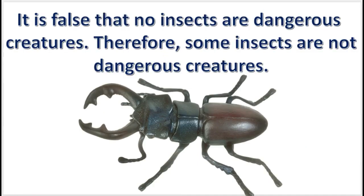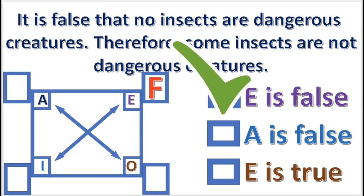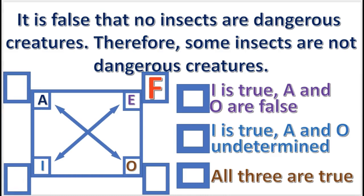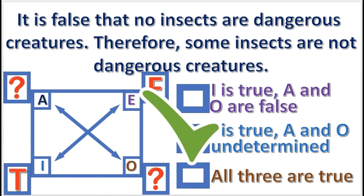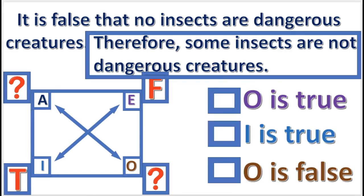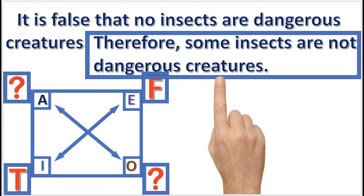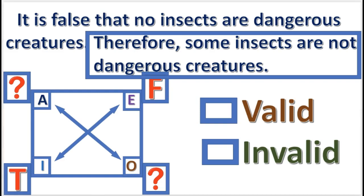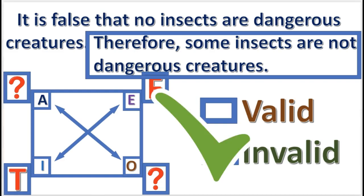Next practice problem: for the premise, what truth value do you enter into the square? E is false — we assume that the premise is true, and it says that an E proposition is false. Next, what is the truth value for the other propositions? I is true, and A and O are undetermined. The conclusion claims that an O proposition is true. Since the conclusion does not match the square, the inference is invalid.